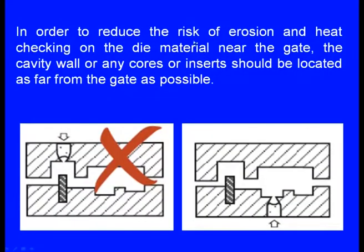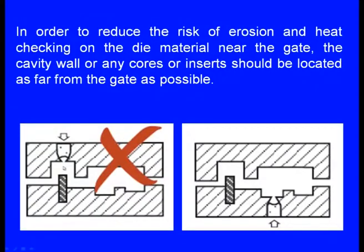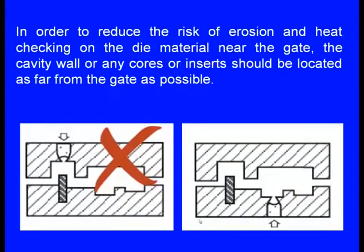The distance from the section gate to the cavity wall should be greater than 50 mm, in order to reduce the risk of erosion and die cracking near the gate. The cavity wall, cores, or inserts should be located as far from the gate as possible. If molten metal is injected and falls directly on the core, there will be erosion — that is a poor design. In the correct design, the core is placed away from where the molten metal is injected at high pressure, making it a better design.